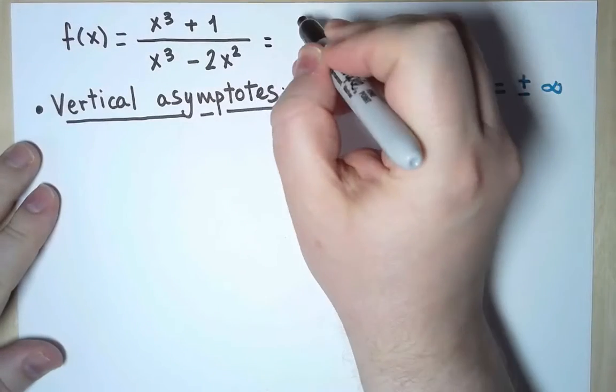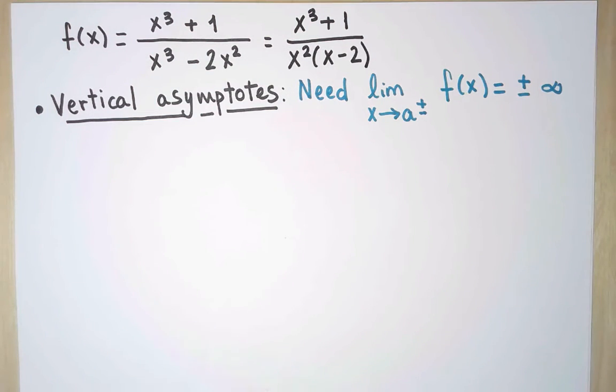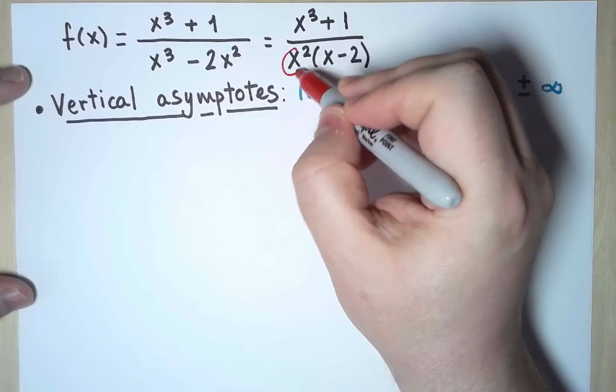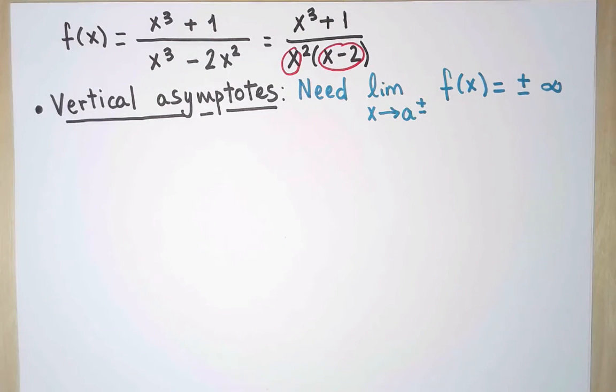It will help to factor the denominator. And I see now that there are two values where the denominator vanishes, at zero and at two. So let's examine them separately.